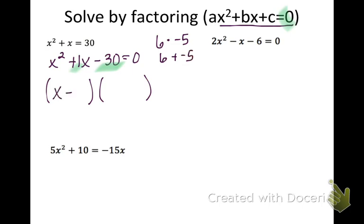So we have x plus six and x minus five. The five needs to be negative and the six needs to be positive in order for them to add to one. Once I have that, I'm just going to set each part equal to zero and get x equals negative six and five. Whenever there's just a one in front of the x's in the parentheses, it's just change the sign.